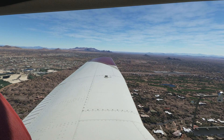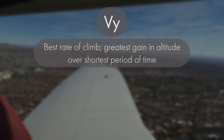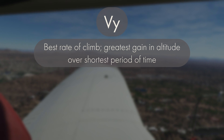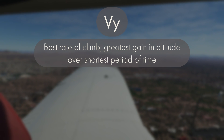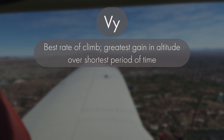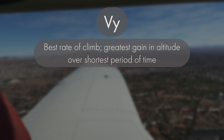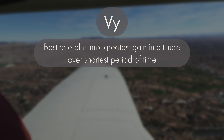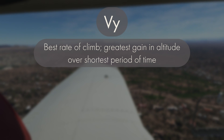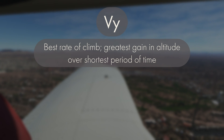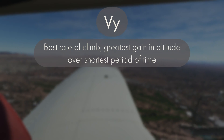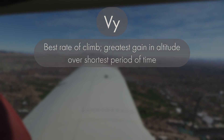The other V speed VX is most commonly confused with is VY, or the best rate of climb. VY, contrary to VX, is the greatest gain in altitude in the shortest time period — so this has to do with time, not distance. VY is typically the speed you're going to climb out on because it gives you the fastest gain in altitude over a set period of time. In the Piper PA-28, VY is 76 knots.